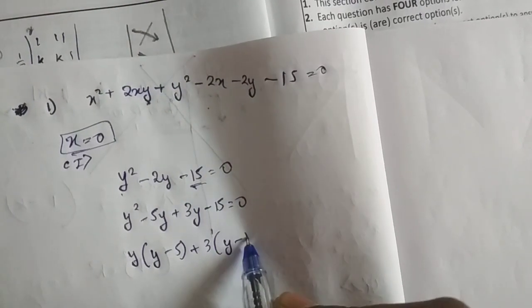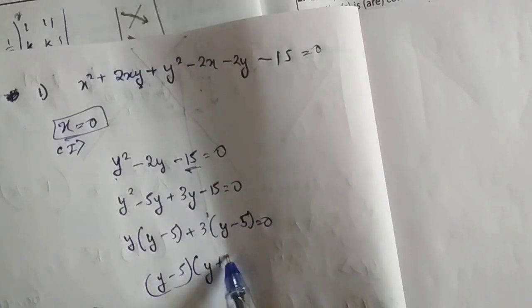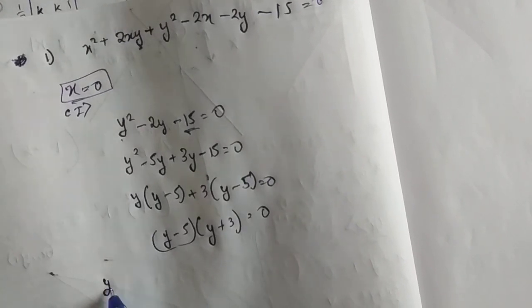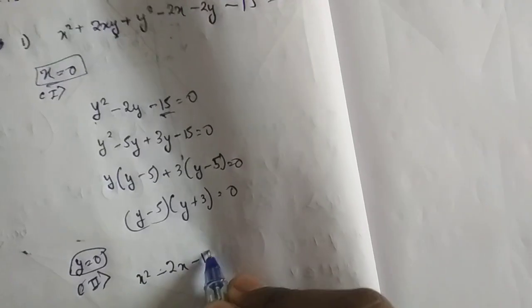y minus 5 equals to 0. Now let's put y equals to 0, case 2. Putting y equals to 0 will give us x square minus 2x minus 15.